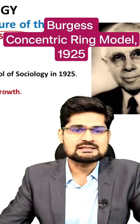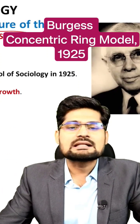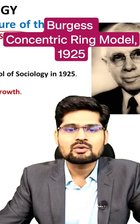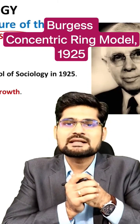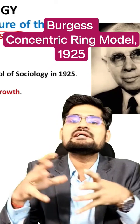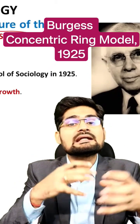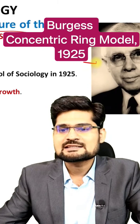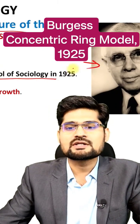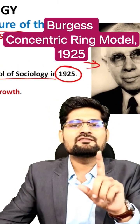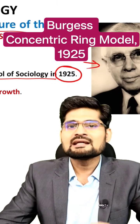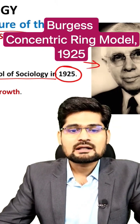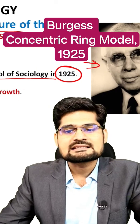The first kind of models are called classical models. When we say classical models, it means we are talking about those cities, those urban places which began with the advent of urbanization during the industrial revolution. E.M. Burgess, a scholar from the Chicago School of Sociology, in 1925 gave the first urban morphology theory — that is, the internal structure of the city — and his model is called the classical model of city structure and city growth.